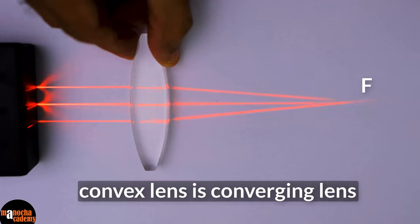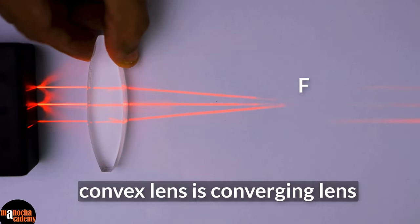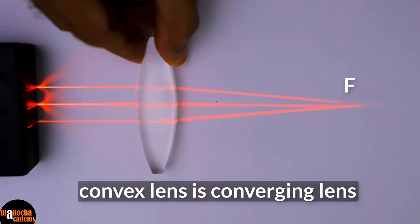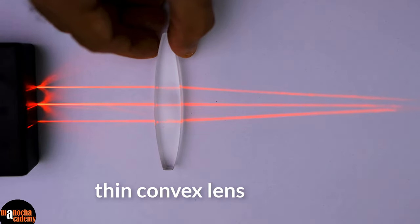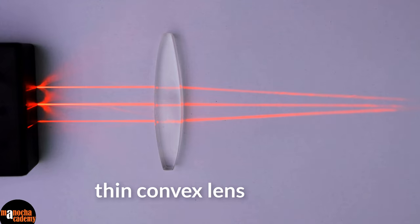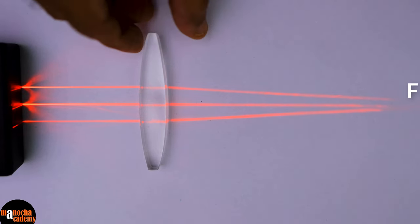If you move the lens, again you can see that the convex lens is converging the light rays to a point. Now, if I replace the thick convex lens with a thin convex lens. Can you see the difference here? The focus is further away from the lens.